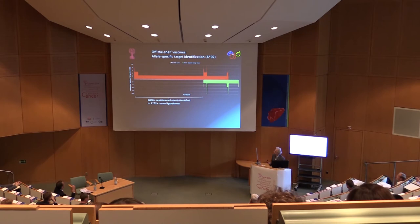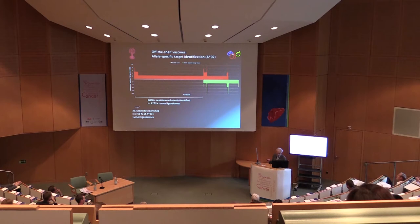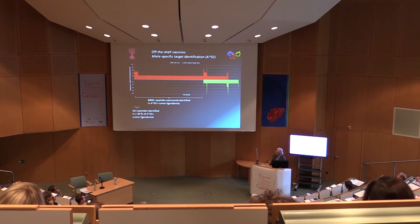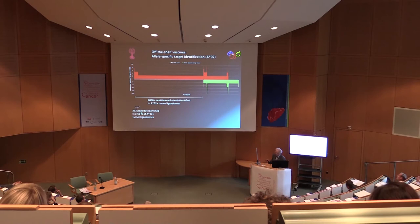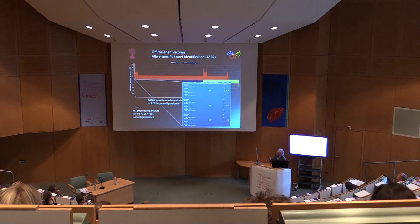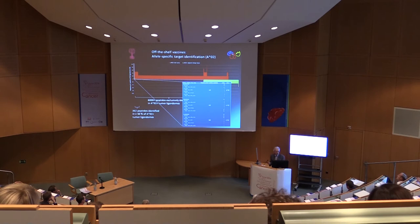We have done this for a couple of hundred solid tumors, particularly renal cell carcinoma and others. An important point is that all these non-mutated tumor-associated peptides are expressed in a very patient-specific manner. Of around 6,000 peptides found to be tumor-associated in a number of renal cell carcinomas, only about five percent are found in more than half of the patients' tumors, and very few — only three — are found in most tumors. So most of these even non-mutated tumor-associated peptides are expressed in a highly individualized fashion.